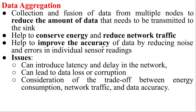Data aggregation also helps improve accuracy, which is very interesting. Sometimes we say that reducing data means losing information. But reducing data can sometimes improve accuracy because it reduces noise. When you transmit data wirelessly, noise comes into the picture. If there is 30% or 20% noise — for example, if you transmit 10 data points, two or three may be noisy. If you transmit less data, the noise is less.